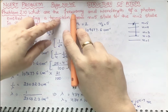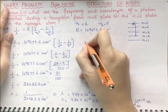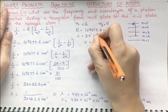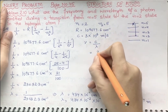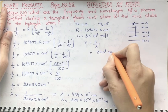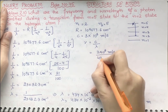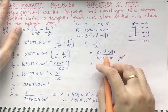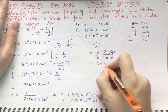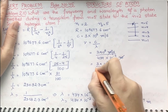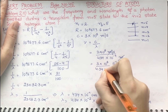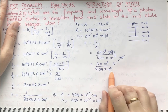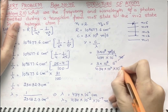Now we have the wavelength. Next, the target is to find the frequency. We know that nu equals C by lambda. C is the velocity of light, which is 3 times 10 raised to power 8 meter per second. Putting the values: 3 times 10 raised to power 8 meter per second divided by 434 times 10 raised to power minus 9 meter. We can rewrite 434 as 4.34 times 10 raised to power 2 times 10 raised to power minus 9.